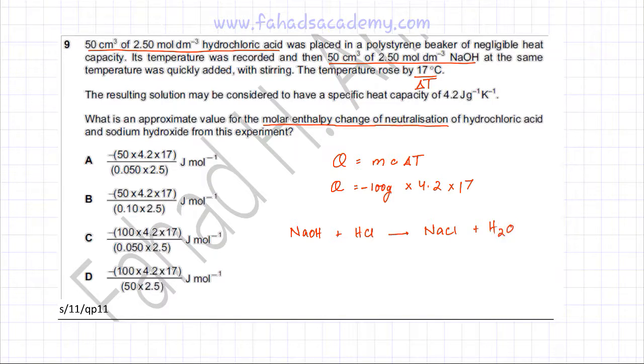So the amount of NaOH that's actually being used in this reaction is 50 cm³ of 2.5 moles per dm³. Similarly the amount of HCl that's being used is also 50 cm³ times 2.5 moles per dm³